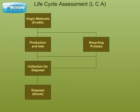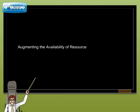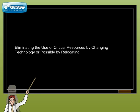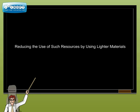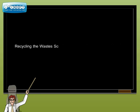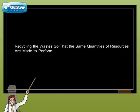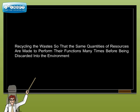A Life Cycle Assessment, or LCA, studies the impact of a particular product or activity over its entire life cycle. This is now commonly carried out in many parts of the world for a range of products and services. After such analysis and assessments are made, the following strategy options would be required to put industrial ecology into practice: augmenting the availability of the resource if possible, for example water harvesting; eliminating the use of critical resources by changing technology or possibly by relocating activities using them; reducing the use of such resources by using lighter materials; and recycling the wastes so that the same quantities of resources are made to perform their functions many times before being discarded into the environment.